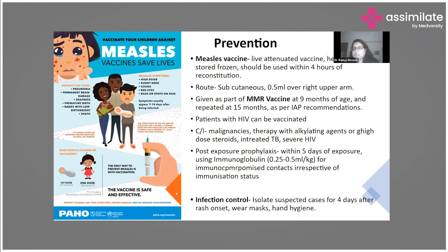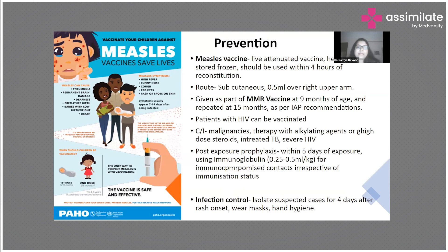Prevention is the most important aspect of measles control. The measles vaccine is a live attenuated vaccine — it is heat sensitive, reconstituted before use, stored at two to eight degrees Celsius, and given subcutaneously as 0.5 ml over the right upper arm. Previously measles was given as a single vaccine at nine months, but now it is given as the MMR vaccine, which includes measles, mumps, and rubella. MMR is given at nine months because transplacental antibody protection wanes by then. The first dose is at nine months and the second at 15 months, as per IAP recommendations.